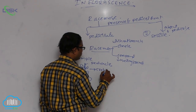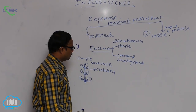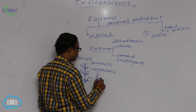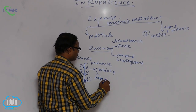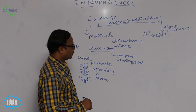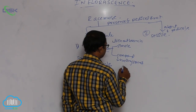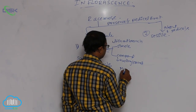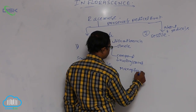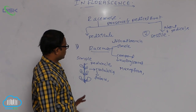Simple racyme example is Crotalaria, which belongs to the Fabaceae family. Compound racyme means having branches — example is Mangifera. That is known as racyme.